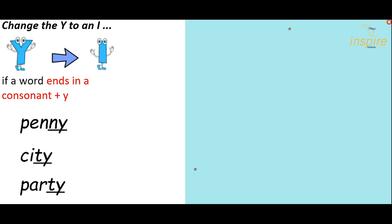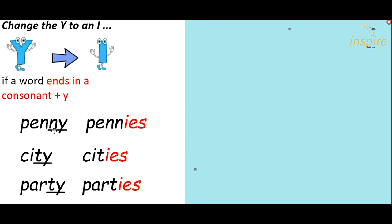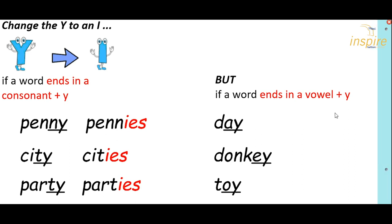This rule we've looked at before when we did the prefixes and suffixes video. We still apply it when we're adding the suffix S. We need to change a Y to an I. If the word ends in a consonant and Y, so penny becomes pennies, city becomes cities, party becomes parties. Each of these Ys has a consonant before it.